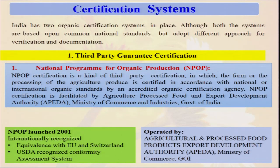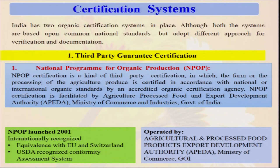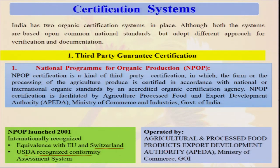In the case of PGS certification, a farmers' group can certify their produce under certain protocols under the Ministry of Agriculture, but that produce cannot be sold outside India. NPOP — the National Programme for Organic Production — was started in the year 2001 and is internationally recognized. It is equivalent to European Union and Switzerland standards, and is also recognized by USDA. 42 percent of the world's total organic production is consumed by the USA alone, making USDA recognition very important.